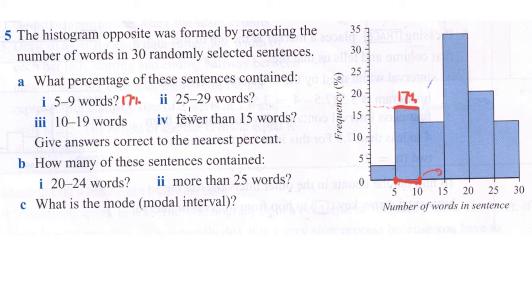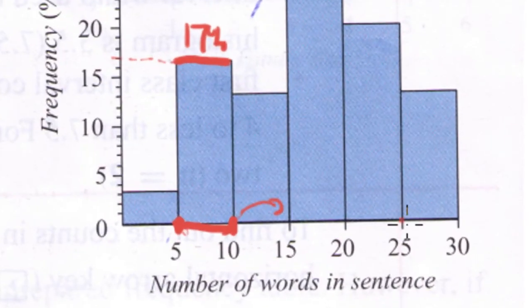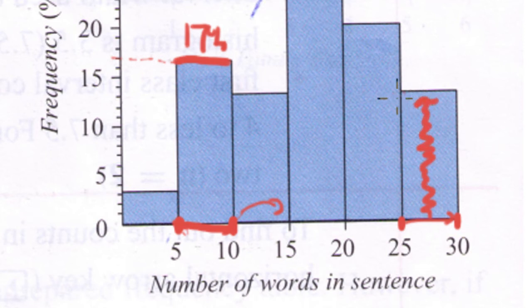The next question asks what percentage of these sentences contained 25 to 29. That's here between 25 up to 29 because we don't include this 30. The height of this bar, going back along to our scale, we read off as 13%.